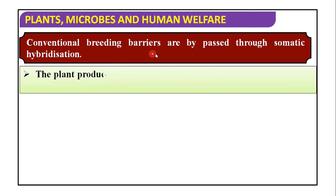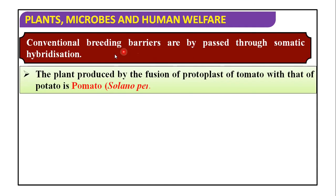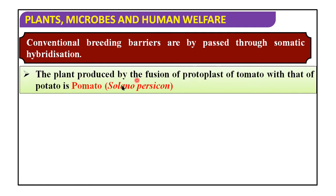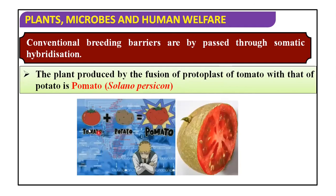Conventional breeding barriers are bypassed through somatic hybridization — instead of conventional breeding, we can use this advanced somatic hybridization technique. The plant produced by fusion of the protoplast of tomato with that of potato gives a hybrid called pomato. Its botanical name is Solanopersicum. So from tomato and potato, we get pomato.